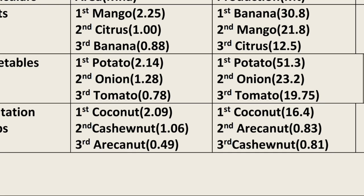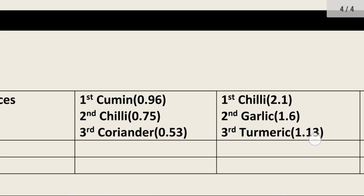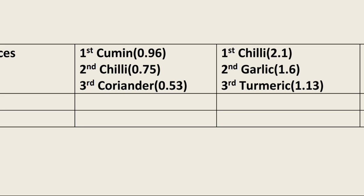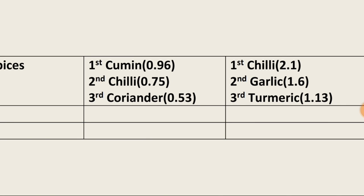For plantation crops, coconut covers the most area and also has maximum production, while cashew nut is in second place for area and areca nut is second in production. Under spices, cumin has the maximum area and chili is second. In terms of spice production, chili is first at 2.1 million ton, garlic is second at 1.6 million ton, and turmeric is third at 1.13 million ton.